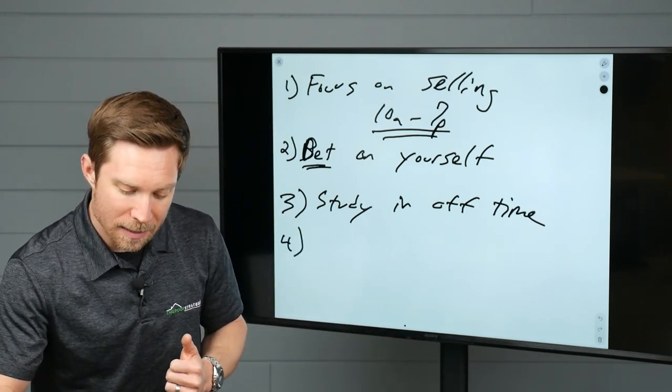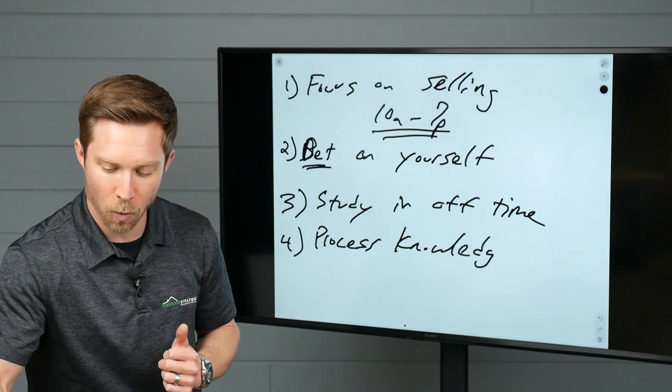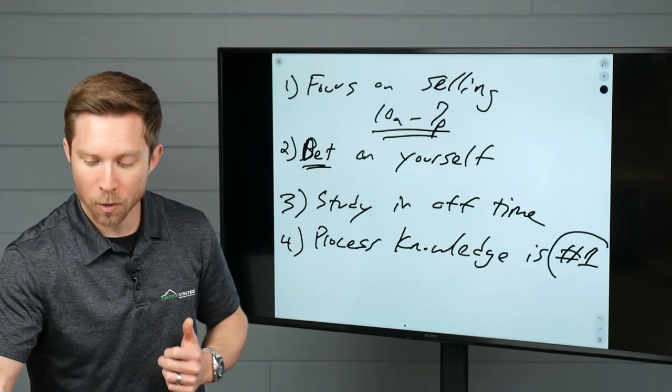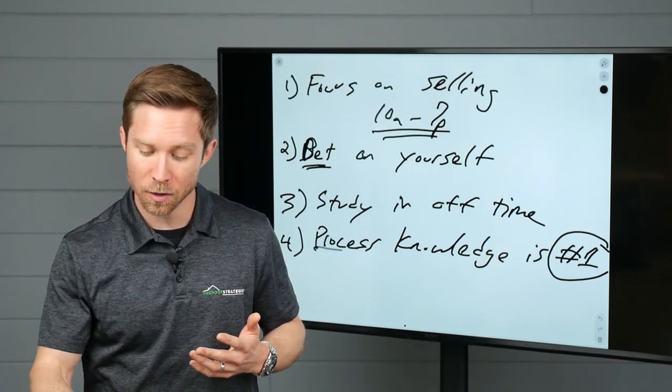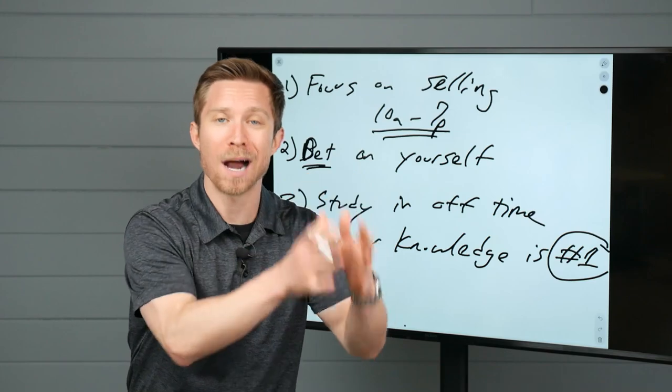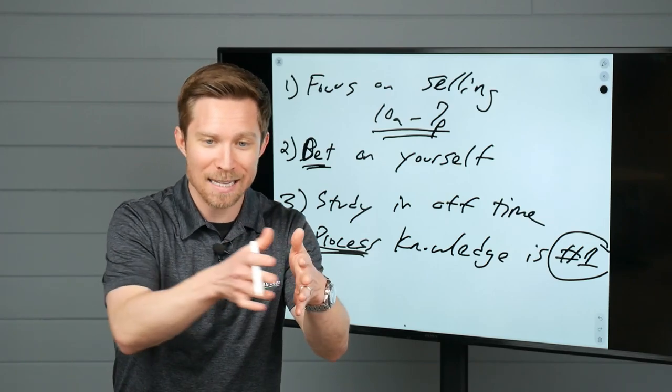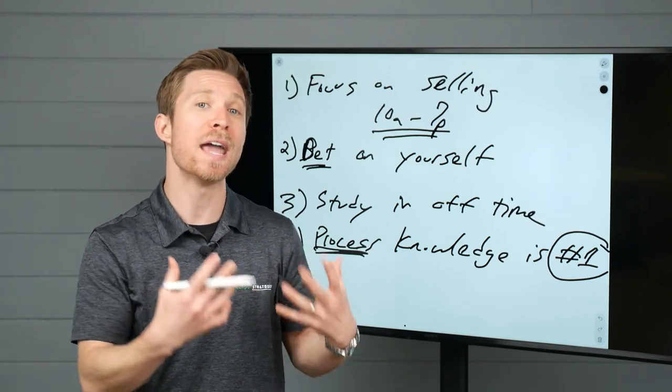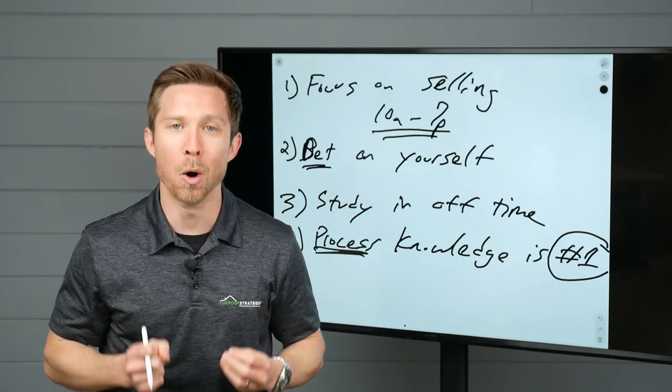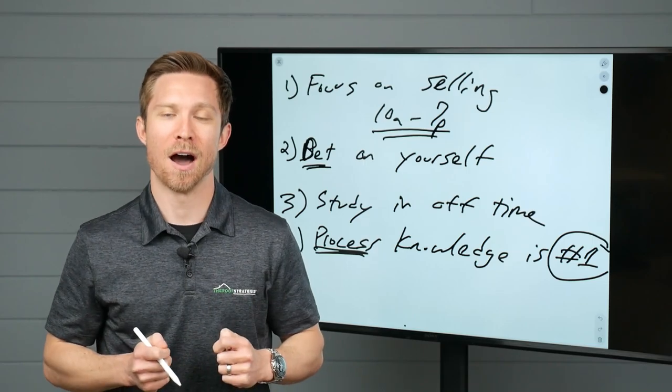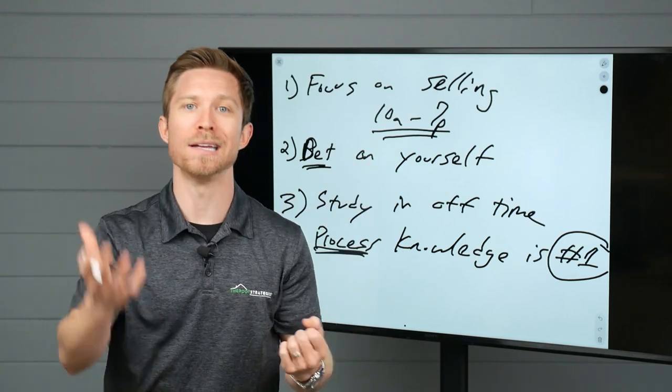Number four is process knowledge over product knowledge. So process knowledge is number one. What do I mean by this? Most homeowners aren't going to drill you with technical questions about shingles and installation. They just need to know that you're competent in the process. If you're selling storm damage roofs, how does the claims process work? If you're doing retail, guiding them through the install, all of the process of what they will experience. That is the number one most important thing. When you get competent in that, you become more confident. Competence breeds confidence.